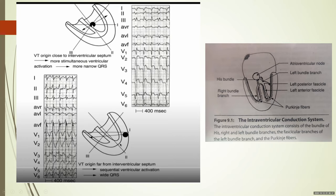If the focus is very close to the conducting system, the morphology will be essentially the same as in sinus rhythm. If it is far away, the morphology will be different from sinus rhythm. Both the morphology and the width of the tachycardia are determined by how close the focus is to the conducting system and how fast it recruits it.